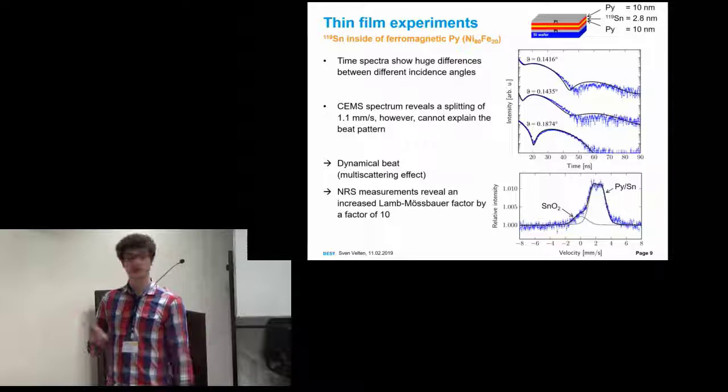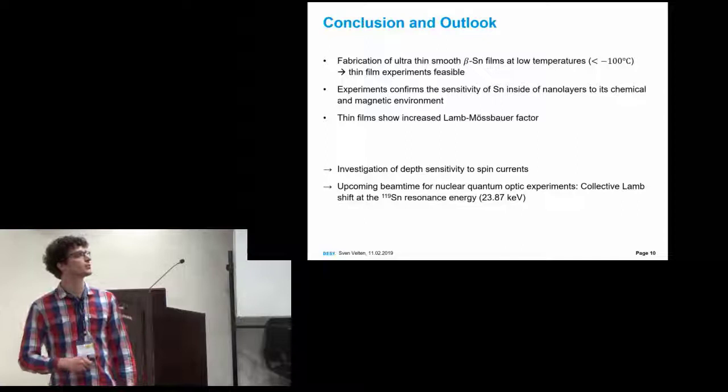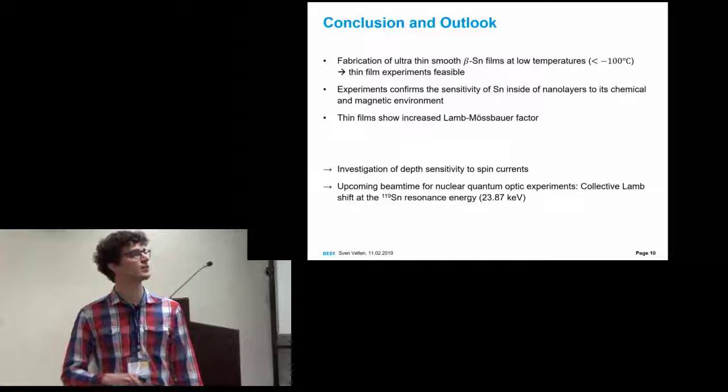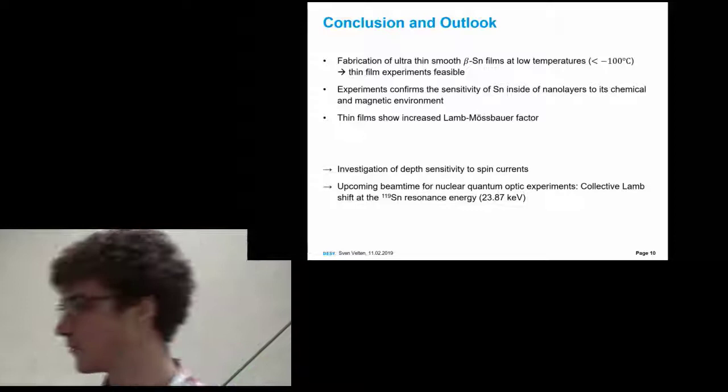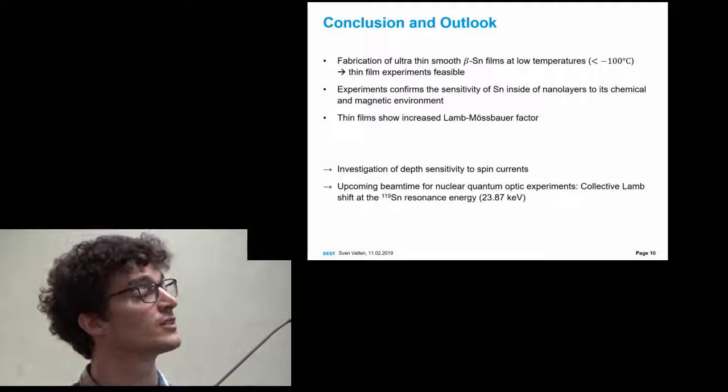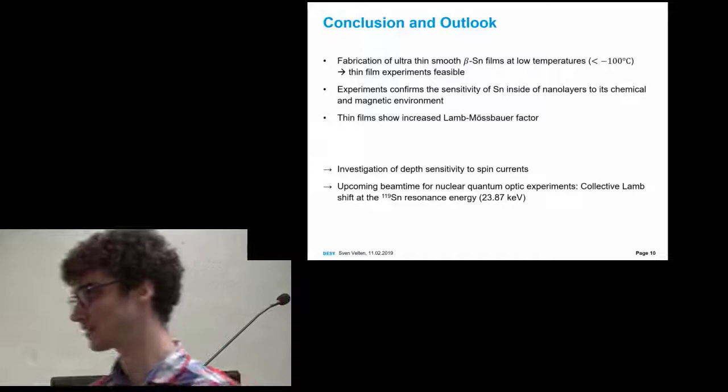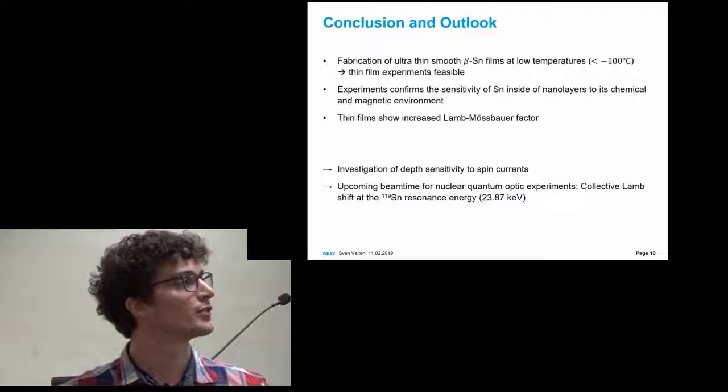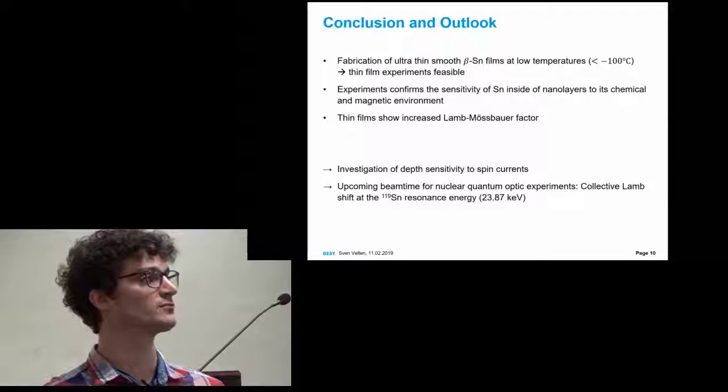In conclusion, we managed to fabricate ultra-thin smooth beta-tin films when deposited under low temperatures, below minus 100 degrees, so that all our thin film experiments become feasible. The experiments confirm that the tin is very sensitive to its chemical and magnetic environment. Interestingly, we saw that in thin films on this one example, we had an increased Lamb-Mössbauer factor.